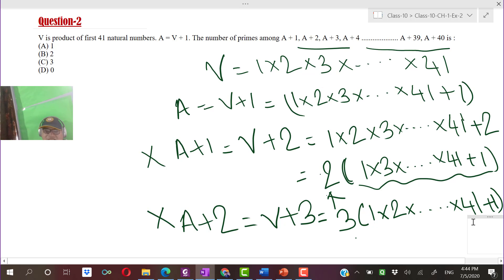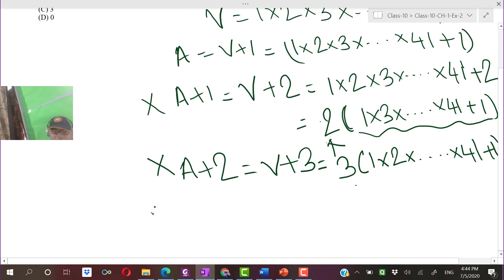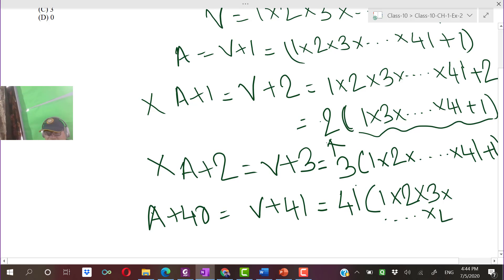A plus 40 is nothing but V plus 41. This number will also not be a prime number because this number will be of the form 1 into 2 into 3 into dot dot dot up to 40, plus 1.